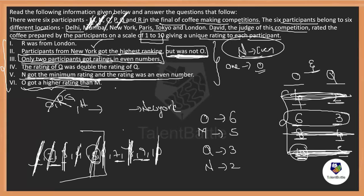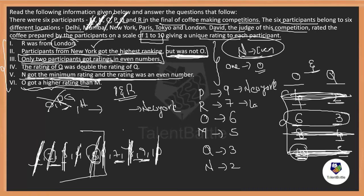R is from London and cannot be the first participant since the first participant belongs to New York. Therefore P must hold rank 9 (first place, from New York) and R holds rank 7 (from London). For the other participants' cities, we do not have enough information to determine them.